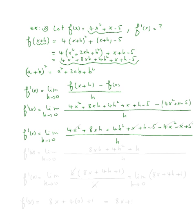On the next step we're going to cancel some terms. Four x squared cancels with negative four x squared; x cancels with minus x; and negative five plus five is zero. So the numerator becomes eight x h plus four h squared plus h, all over h.